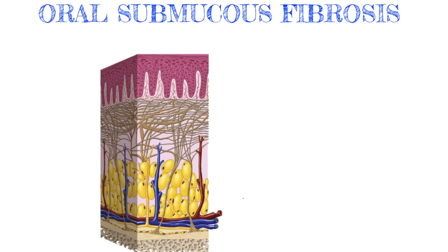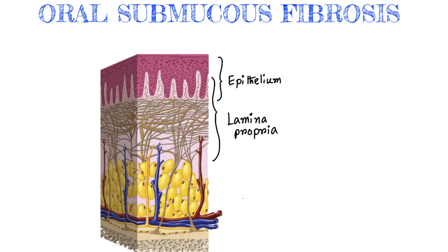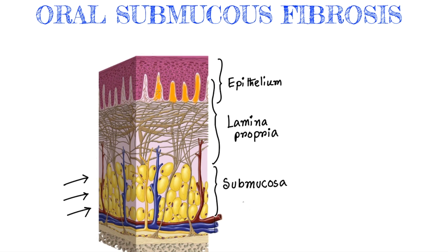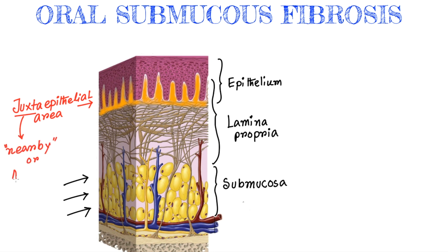What is submucous fibrosis? Here you can see the oral mucosal layers. At the top there is epithelium, and just beneath the epithelium there is lamina propria, and then the submucosal layer. So the fibrosis should be in the submucosal layer, as the name clearly suggests — submucous fibrosis. But interestingly, it is not in the submucosal layer. Fibrosis occurs in the juxtaepithelial region. Juxta means nearby or adjacent, so fibrosis occurs just adjacent to the epithelial layer. So it is a misnomer — it should be called oral juxtaepithelial fibrosis.